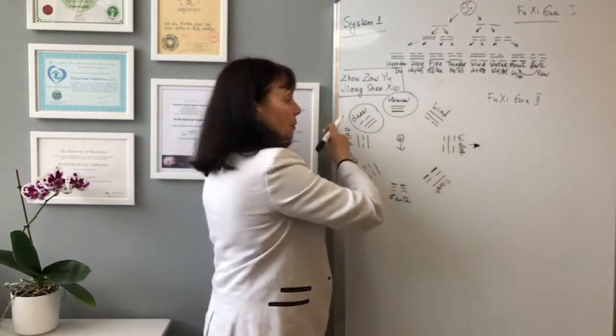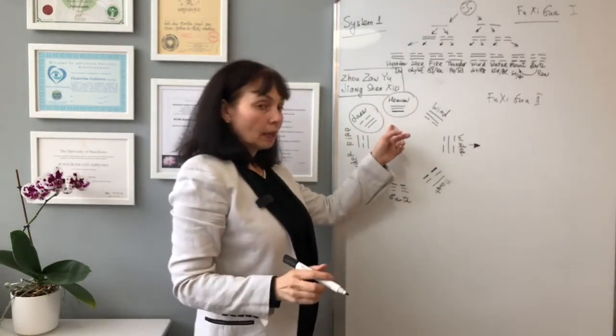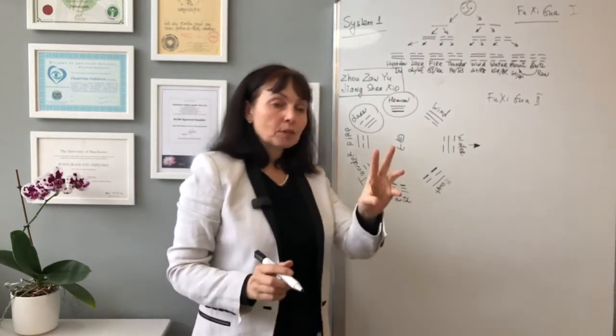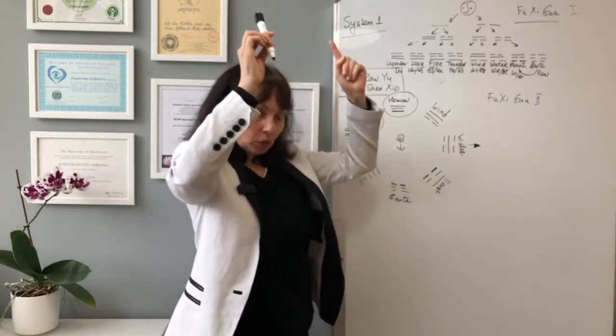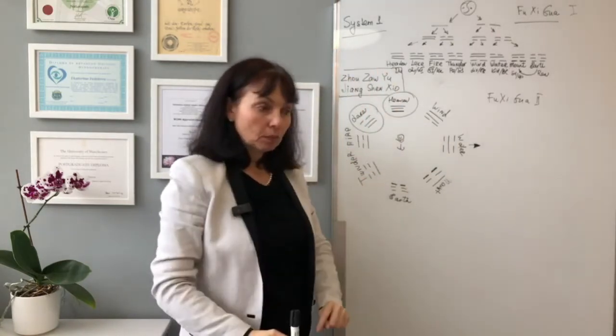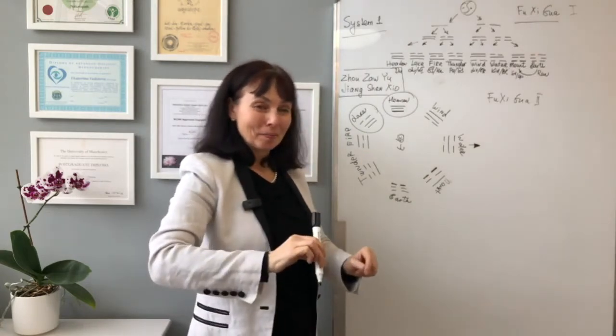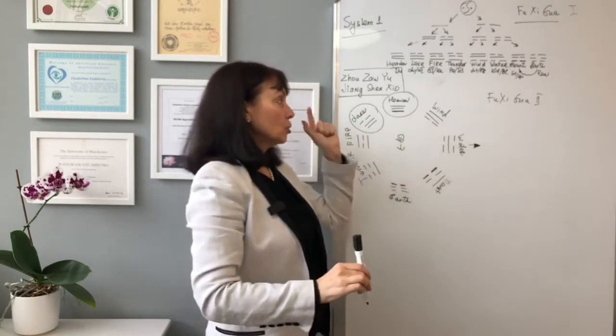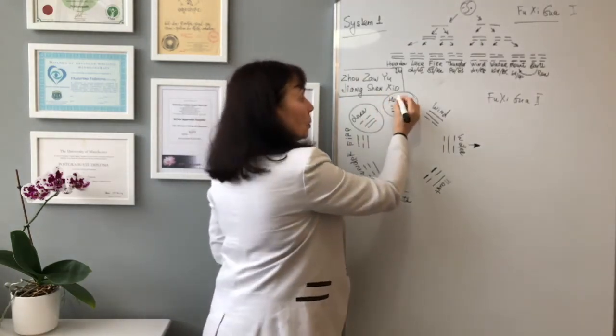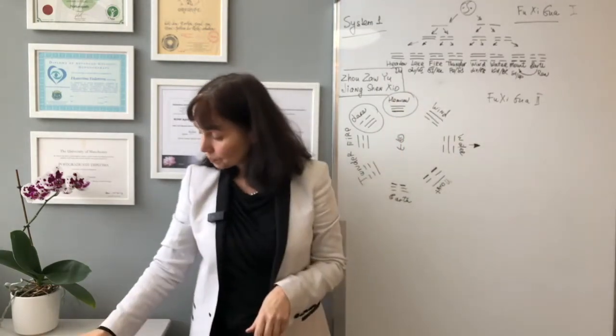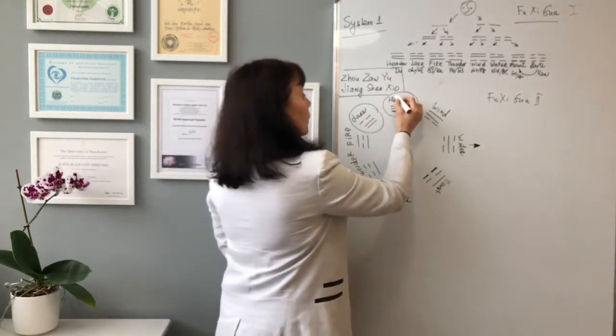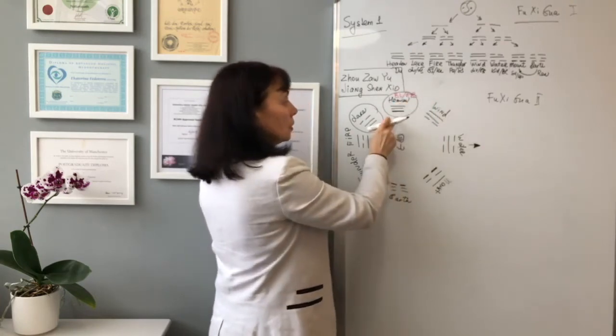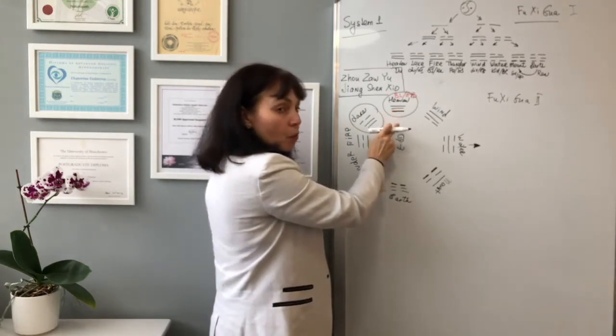And now look at this picture here. I will ask you, which three meridians go from the top to the bottom and they are yang? Bladder, gallbladder and stomach. So they referred bladder and gallbladder to the heaven gua.